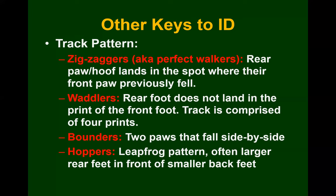Bounders have two paws that fall side by side — they place their front feet down, then in one motion leap forward, lift up their front feet, and put their rear feet in the exact same spot. These would be otters, weasels, and mustelids — think about their tube shape and the way they jump with feet together. Hoppers have more of a leapfrog pattern with larger rear feet, and those rear feet tend to be in front when you look at the track. A good example would be rabbits — they jump off their back feet and put their front feet behind them, so typically their back feet are in front of their front feet in the track. Rabbits and rodents are good examples.